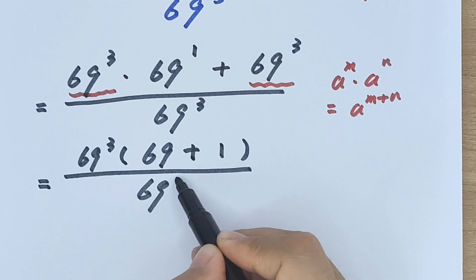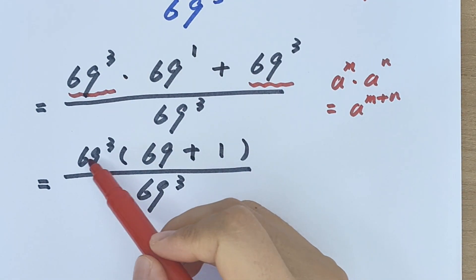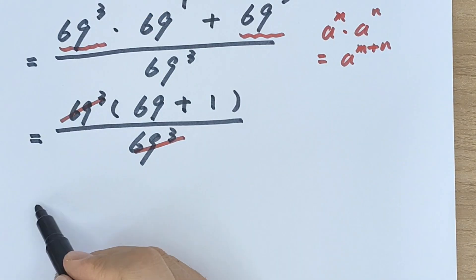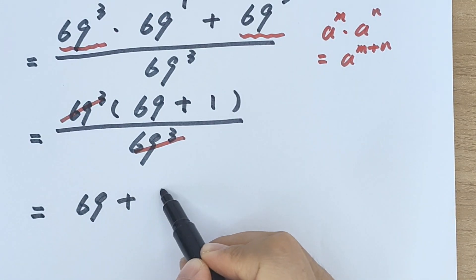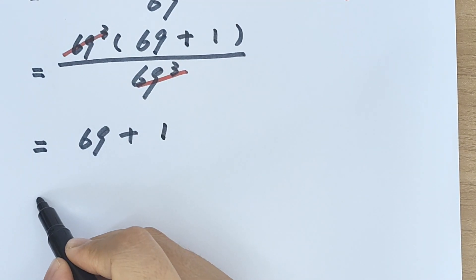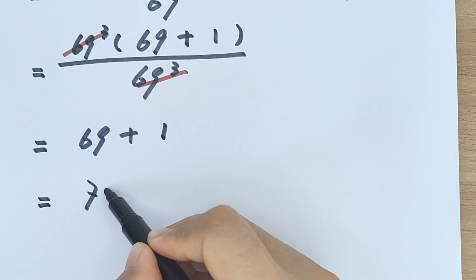Now this will cancel with this, so it will be equal to 69 plus 1. So the final answer is 70.